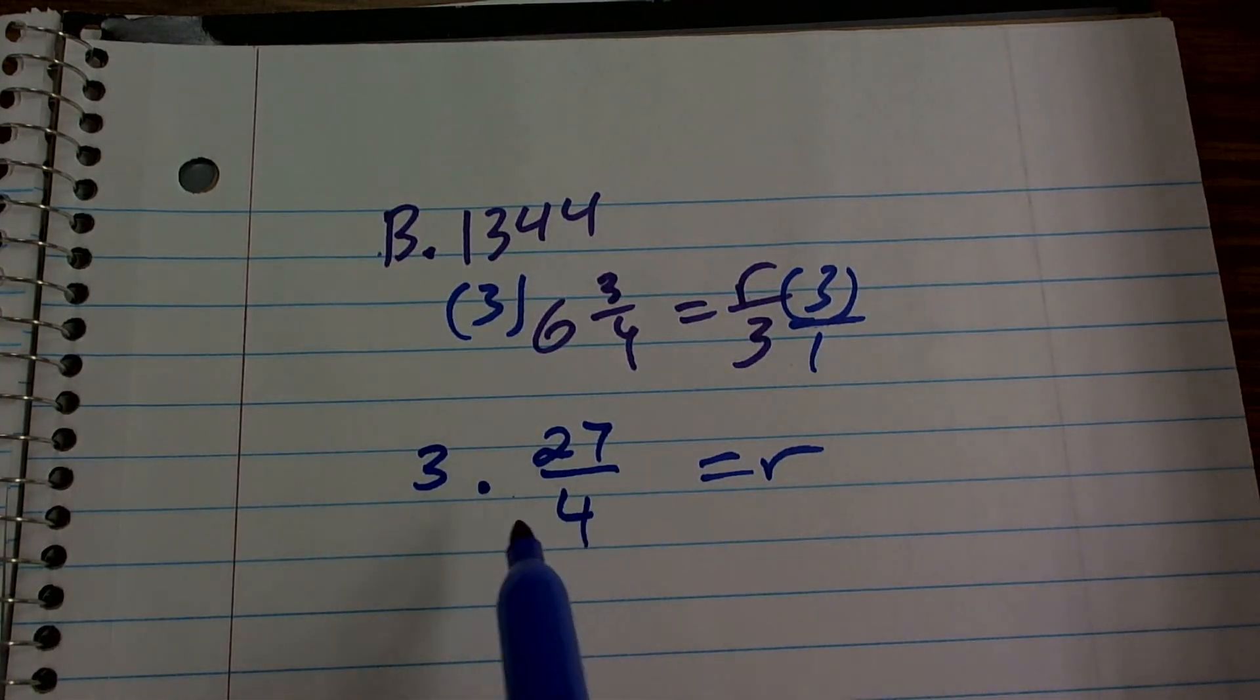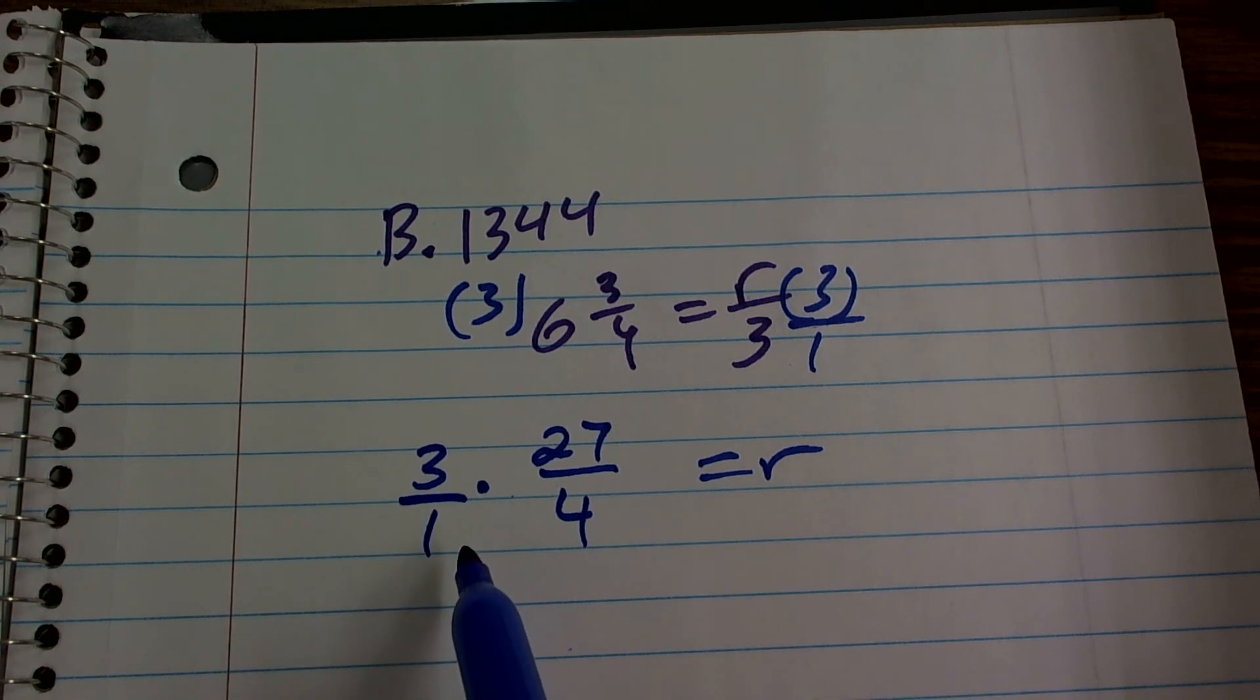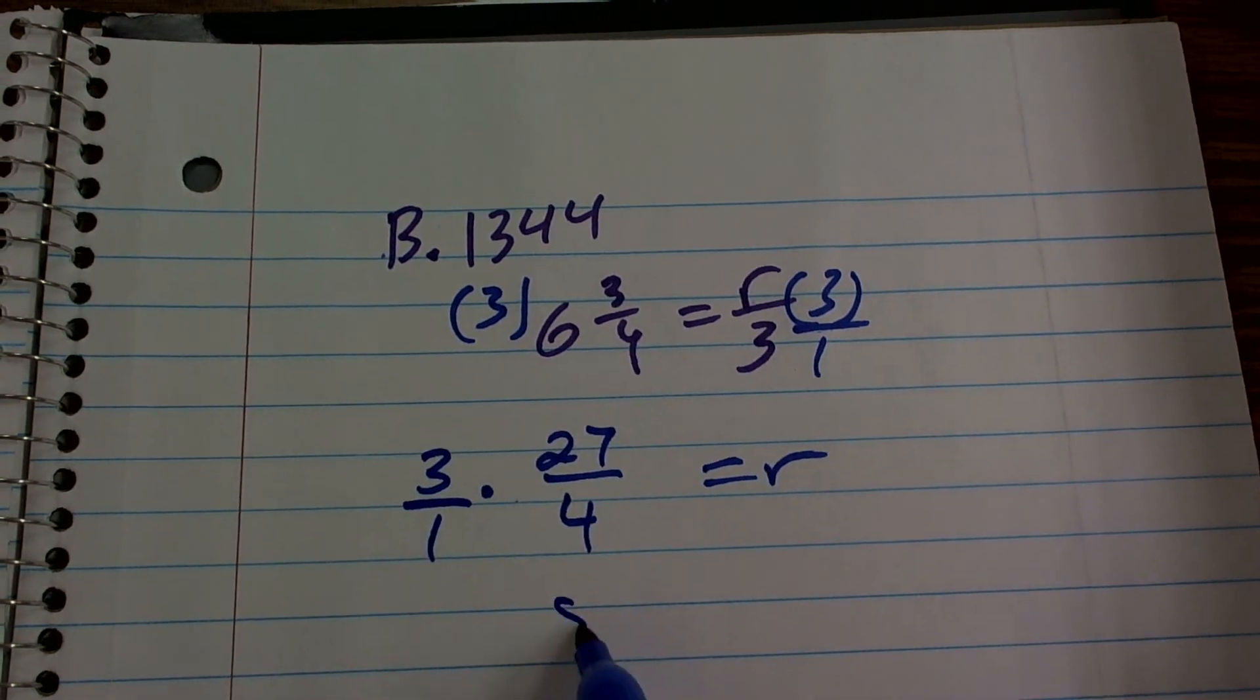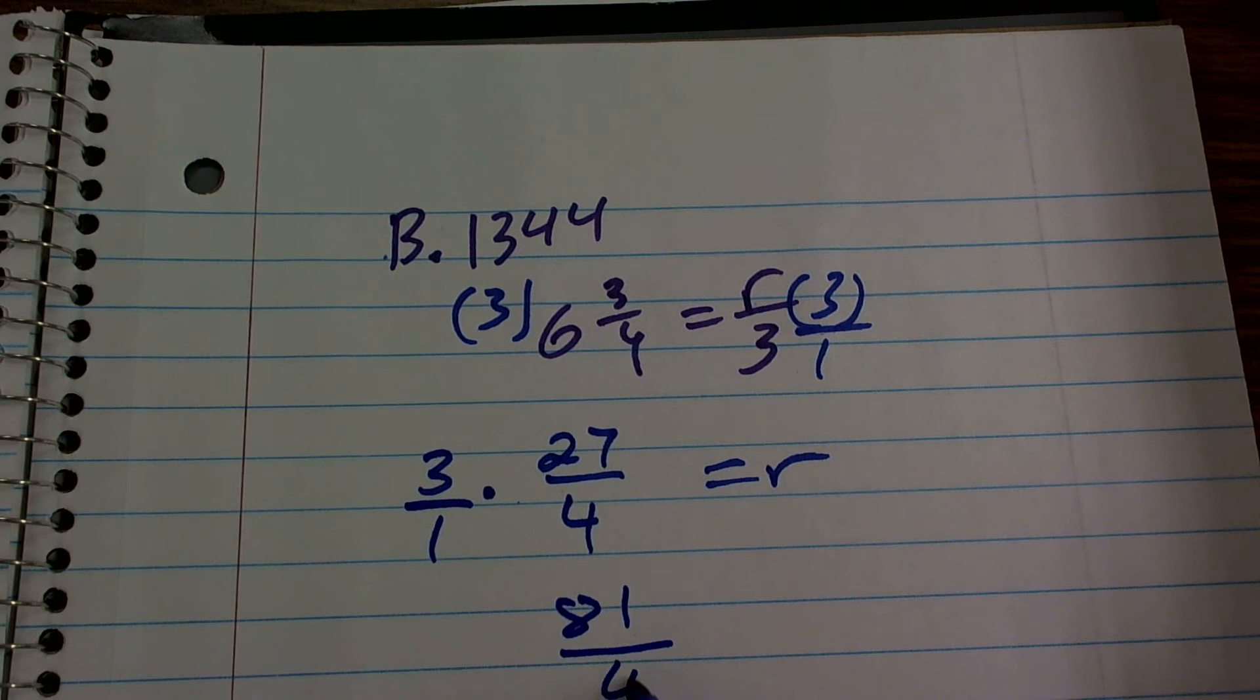And then what I simply do is now I can take my whole number, change it to a fraction, and multiply across, which would be 81 over 4,